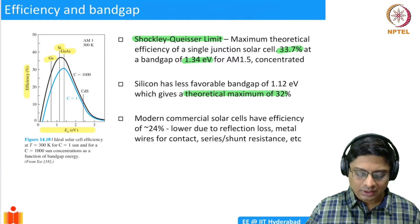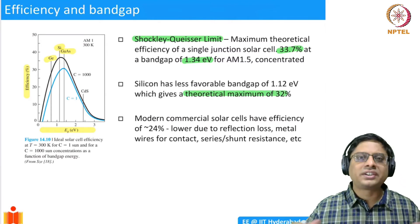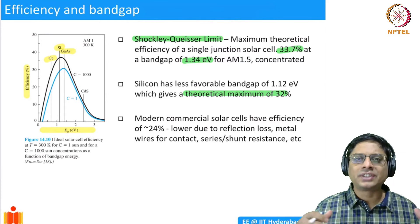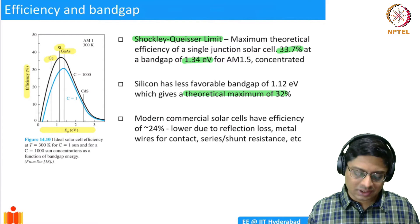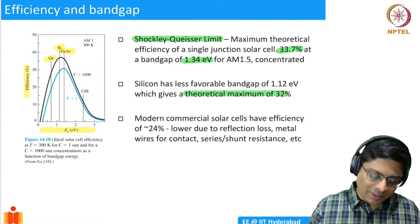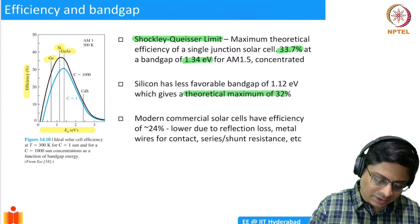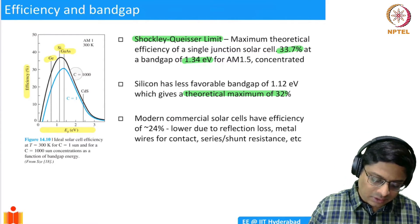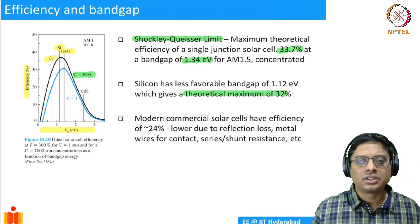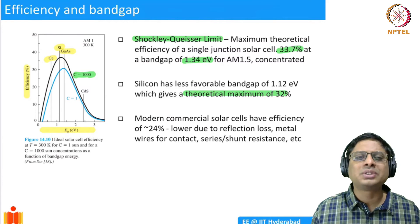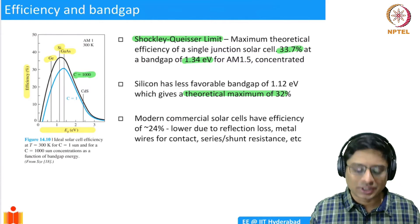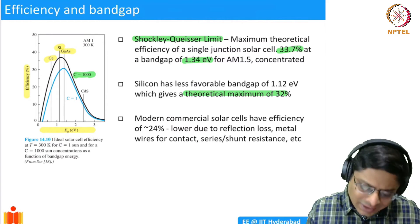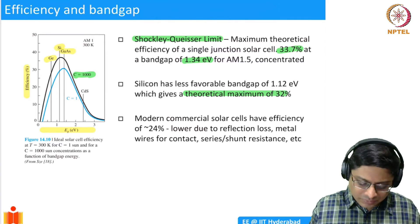If you use concentrated light — putting optics and large lenses to focus sunlight onto the solar cell — you can improve the efficiency. The second curve shows a concentration factor of 1000x. With concentration, efficiency improves, but not dramatically: it goes from about 30% up to around 38%.